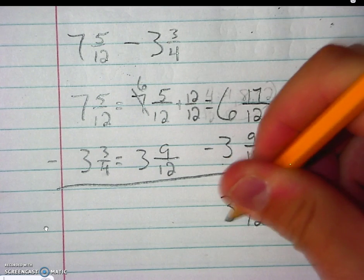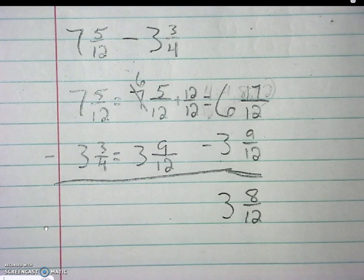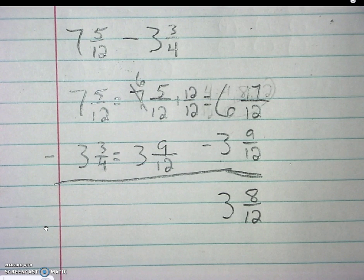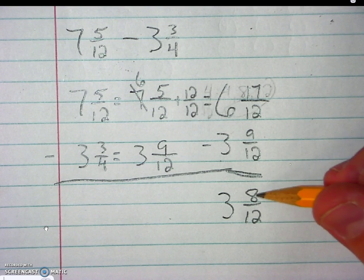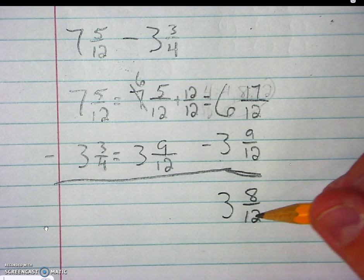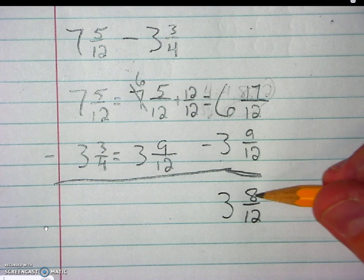6 minus 3 is 3. And my last step will be to simplify. Both of these numbers are divisible by 4. 4 going to 8 twice and 12 three times. So this will simplify to 2 thirds.